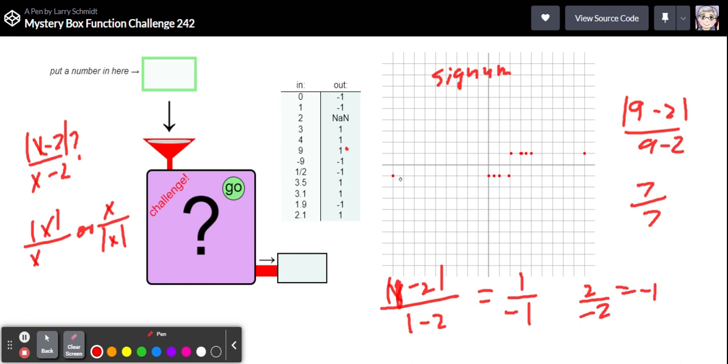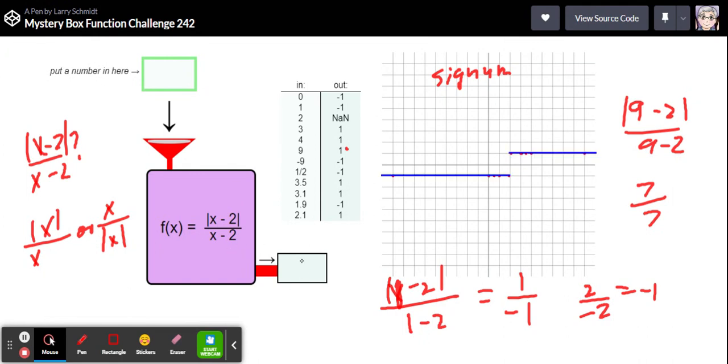I think we've got it, just a combination of taking that signum function and then moving it to the right two. Let's take a look and see if we're correct. And there it is, the absolute value of x minus two over x minus two. Let's take a graph of that. It's a very basic looking graph, just two lines with this undefined value, this point of discontinuity right there at x equals two. Well how did that go for you? I think that was a pretty strange one. Let me know, thanks everybody.